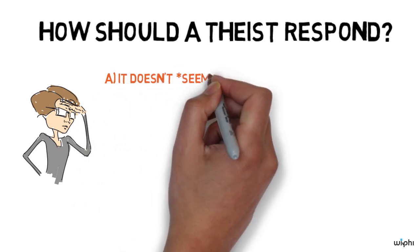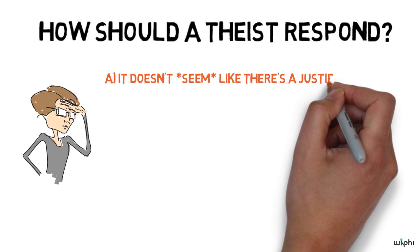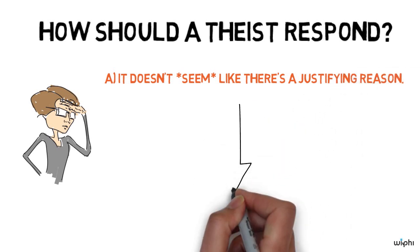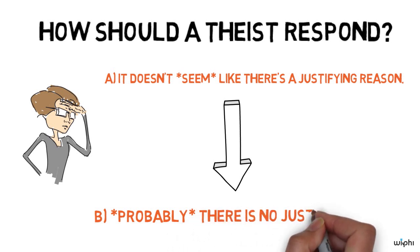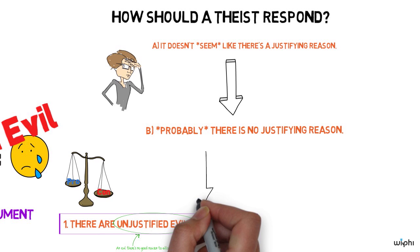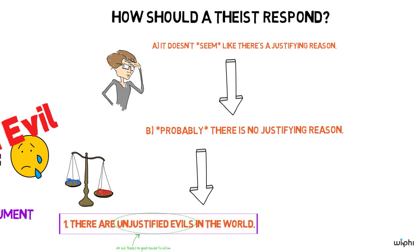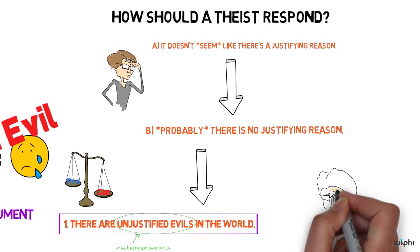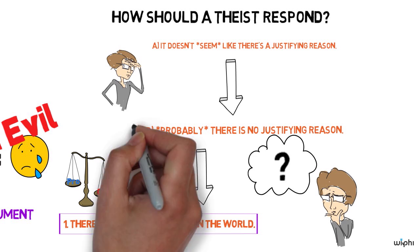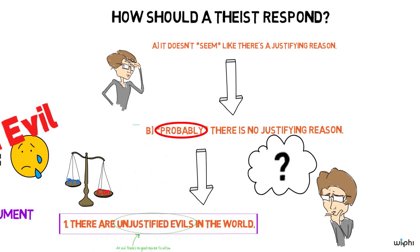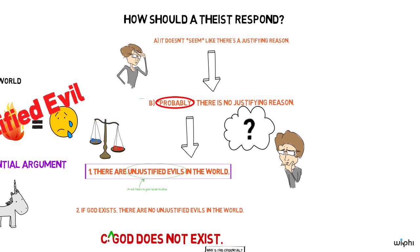And William Rowe's argument goes something like this. First, it doesn't seem like there's a justifying reason. Secondly, therefore, probably there's no justifying reason. And that's the kind of reasoning that's supporting premise one. The evidence we bring to bear to premise one is that as much as we think about it, we cannot discern a justifying reason. So it seems like there is none. Then we conclude, not that there definitely is no justifying reason, but that it's likely or probably there's no justifying reason. And then our conclusion becomes probably there is no God.